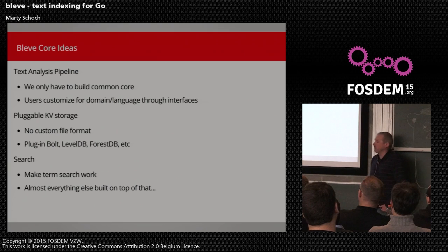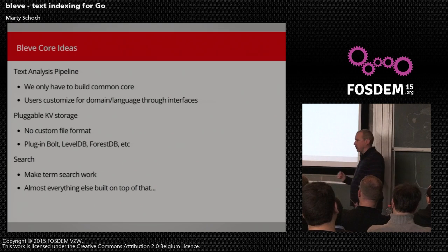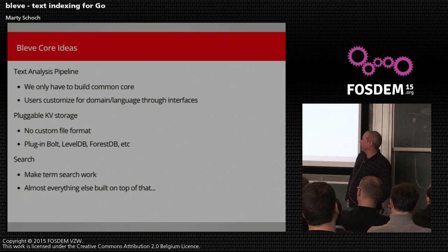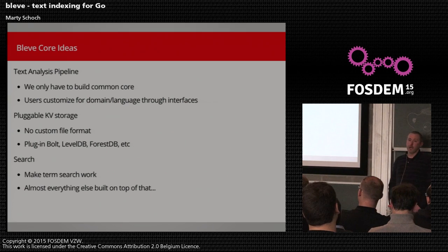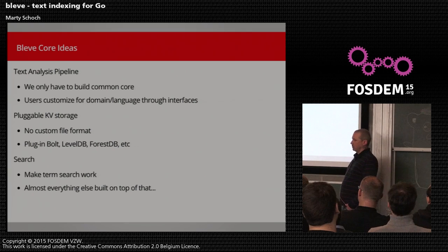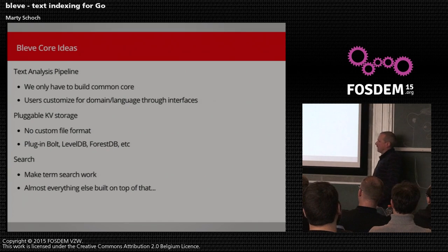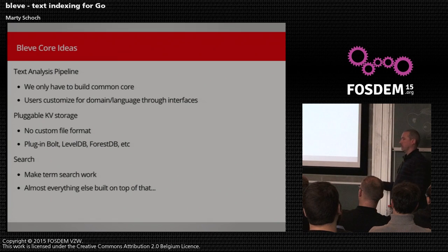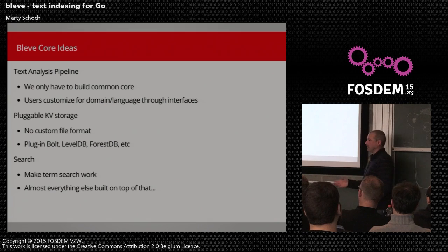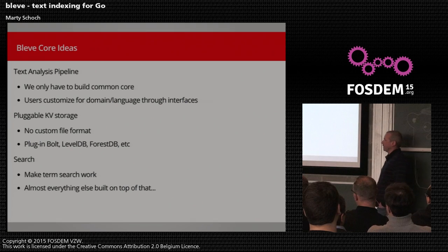The next part was pluggable KV storage. It meant we didn't have to start off by writing some binary file format to squeeze out maximum performance up front. There are a lot of interesting ones out there right now — we have plugins for BoltDB, LevelDB, and ForestDB, and we're looking at adding one for RocksDB as well. This lets users choose whichever one meets their needs best, and some KV stores work better for different use cases — very read-heavy versus real-time indexing, for example.